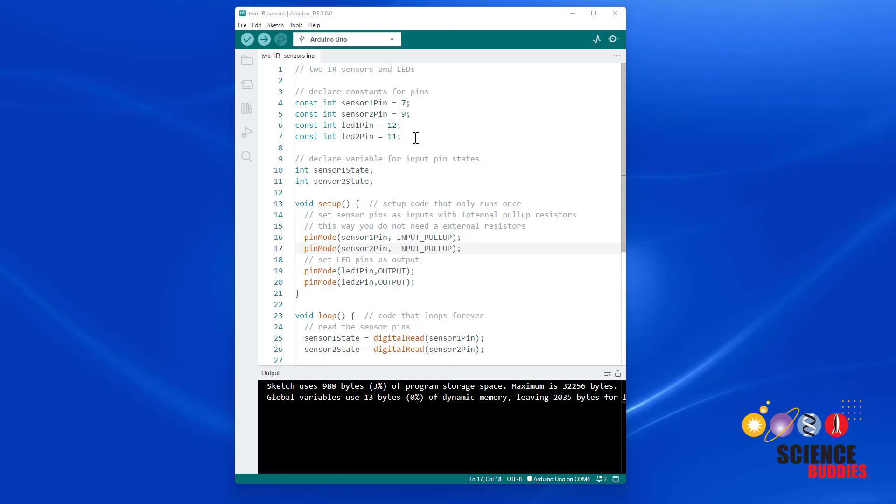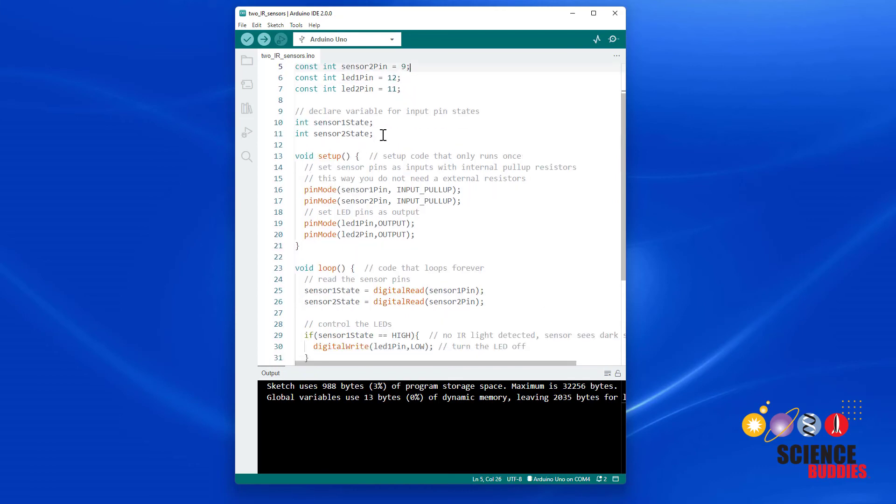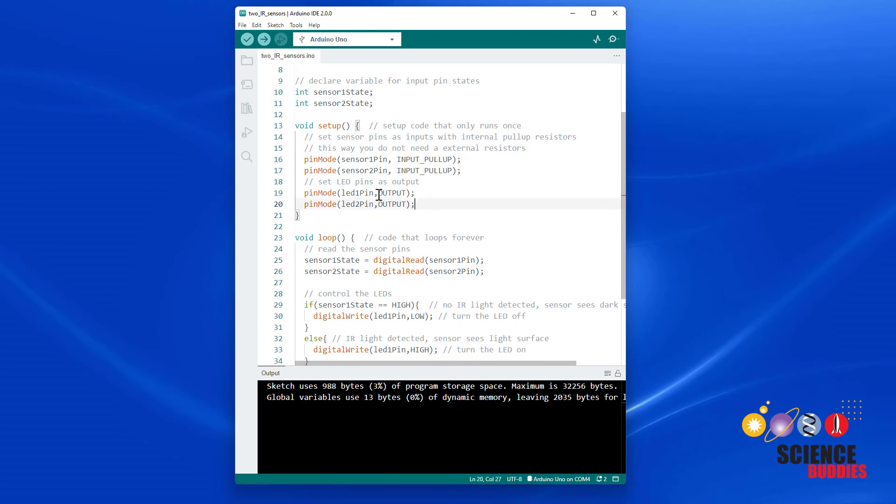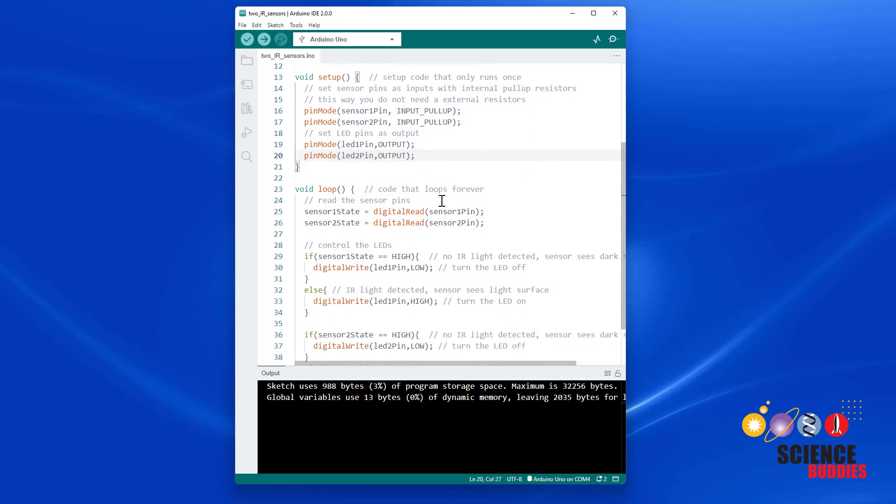Let's take a look at the code for doing this and it is mostly just copying and pasting lines of code and then renaming things because we now have two sensors and two LEDs. So for example instead of just sensor pin I have sensor one pin and sensor two pin, LED one pin and LED two pin, sensor one state and sensor two state.